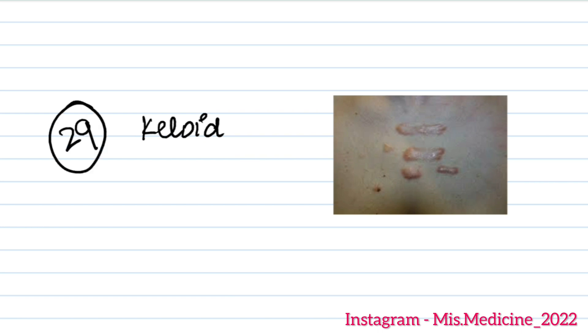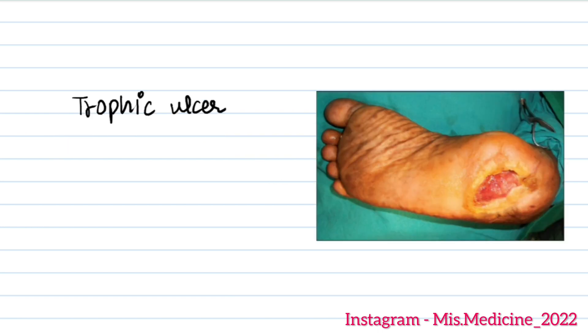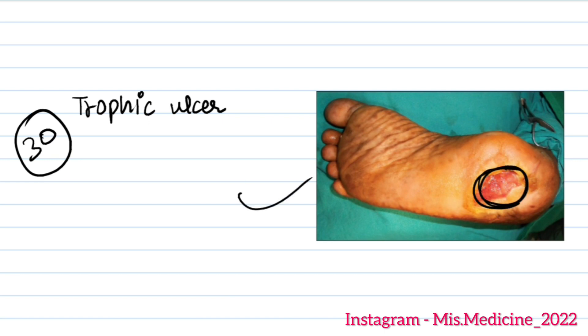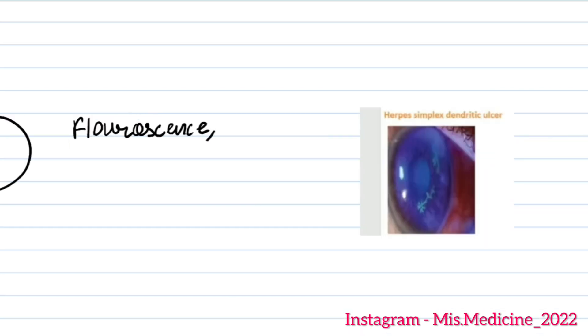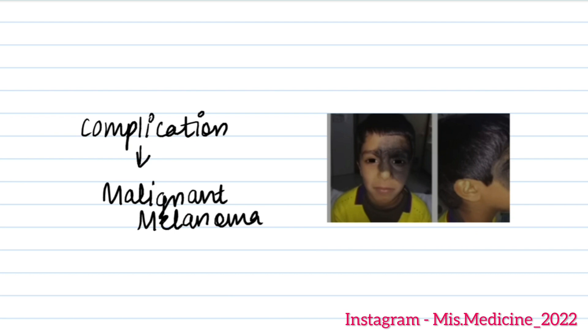Question 29 was a keloid image. Question 30 was something tropical — not exactly clear but kind of circular and deep. There was also an image with a fluorescent green-blue color with some option. Question 32 had an image and a complication was asked, which was malignant melanoma.